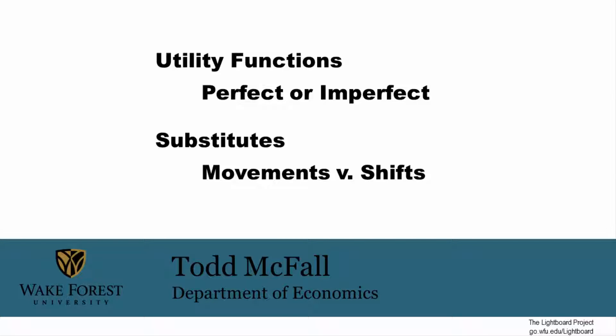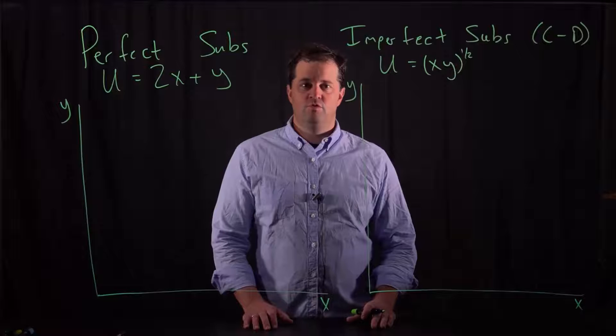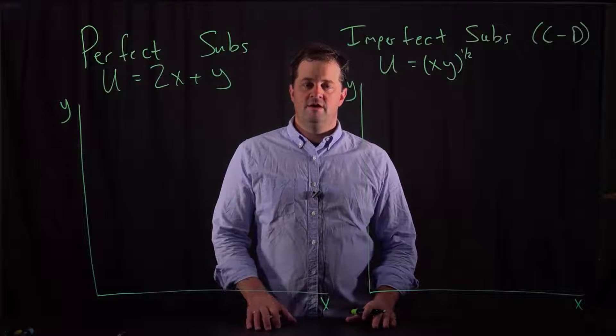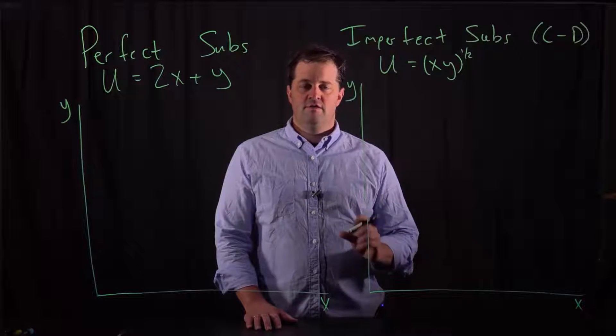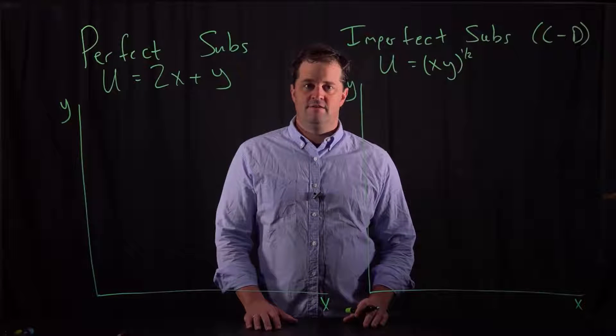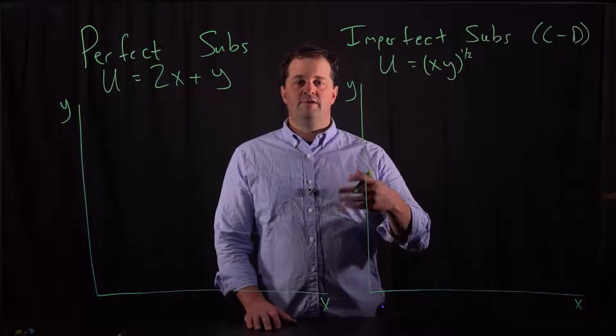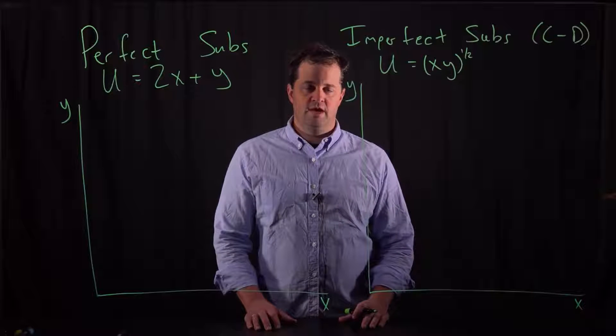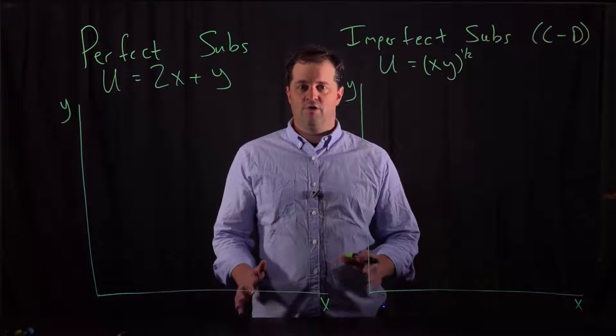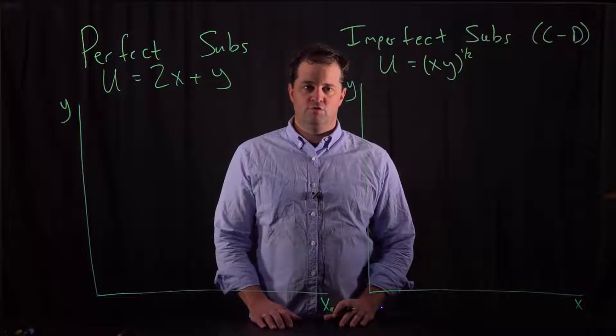So, we want to compare these two different types of utility functions, perfect substitutes and imperfect substitutes. While we're doing that, we want to pay attention to the really important idea of moving along the indifference planes that signify a certain utility level that a consumer has reached, and then thinking about shifting to another indifference plane, which signifies a higher or lower utility level that the consumer reaches.